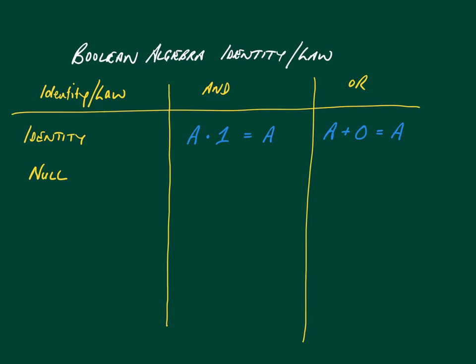For null, it doesn't matter what a is. Because in either case, if it's a AND 0, the output has to be 0. So it doesn't matter what a is. And for a OR 1, it doesn't matter what a is, because the output will always be 1.